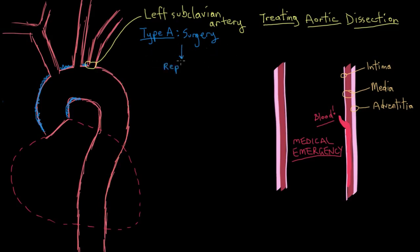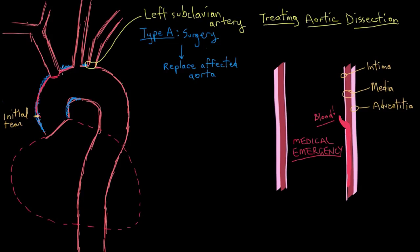The goal of surgery for a type A dissection is really to replace the affected aorta. Let's say we have our initial entry tear here in the ascending aorta, because that's where most of the initial entry tears are. Through this entry tear, blood gets pumped out of the left ventricle and tracks into that initial entry tear — it sees that tear along the aorta wall and ducks inside. Every time the heart beats, it pumps more blood into that tear, splitting the intima and media further from each other.